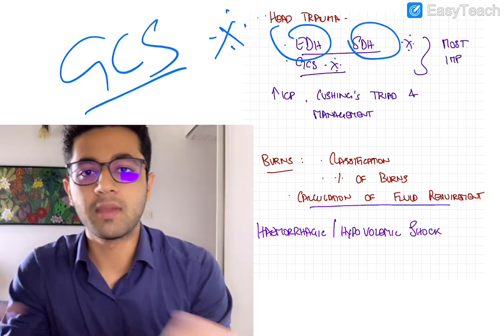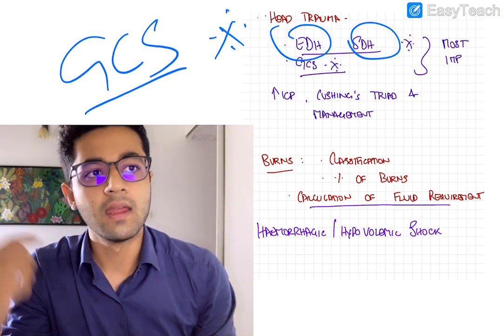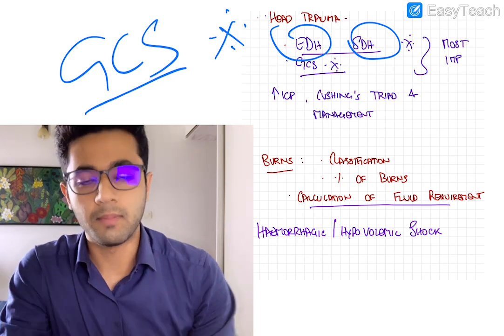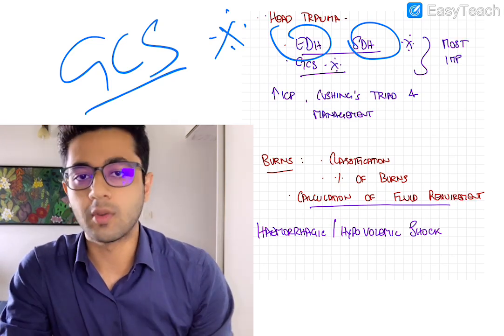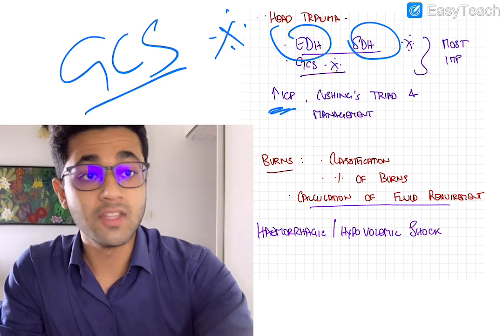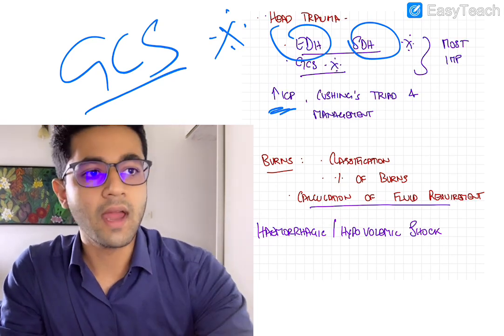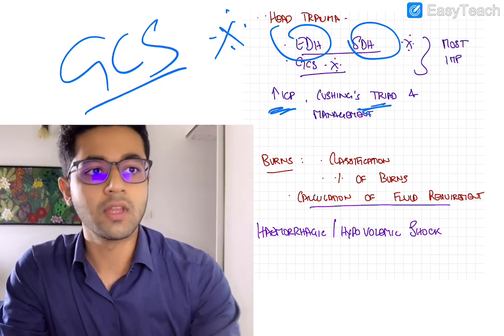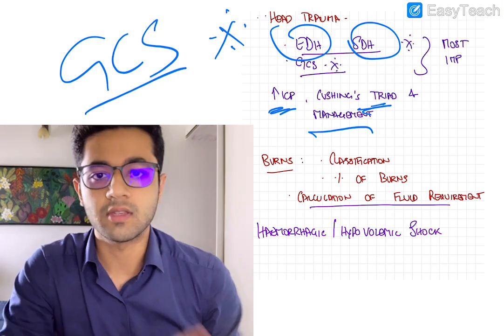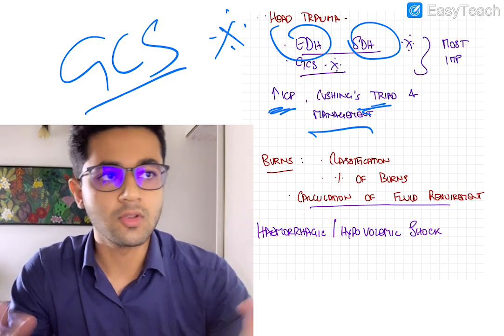EDH, SDH and how they appear on CT, that is your extradural and subdural hematoma, how they appear on CT is very important. They are frequently asked questions. Features of raised intracranial pressure and the Cushing's triad, it's important that you know them, and management of raised ICP. So all of this, super important. So it's all in purple, very, very important.